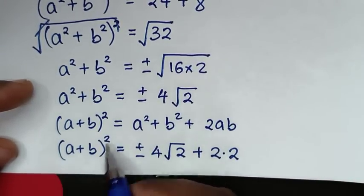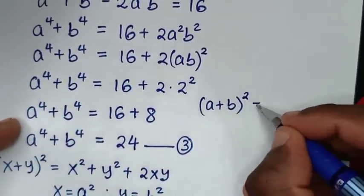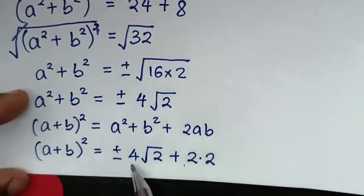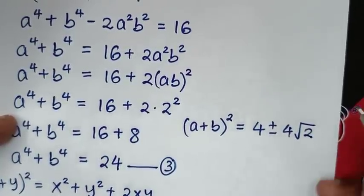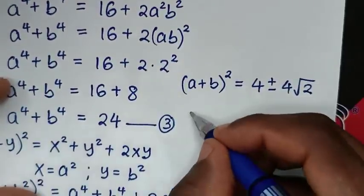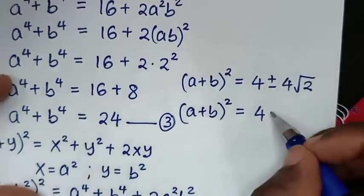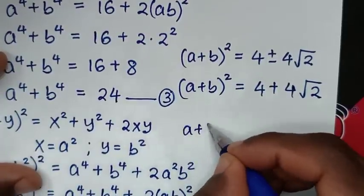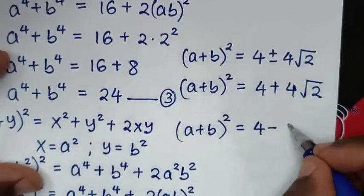So (a + b)² equals 4 plus or minus 4√2. The first solution is (a + b)² equals 4 plus 4√2, and the second solution is (a + b)² equals 4 minus 4√2.